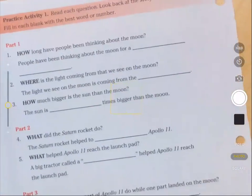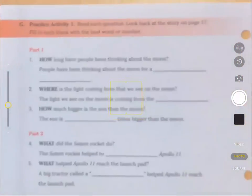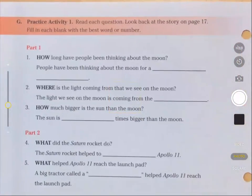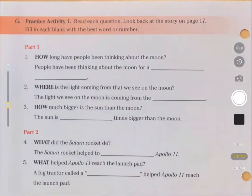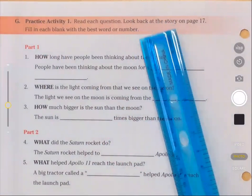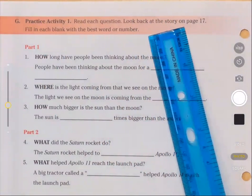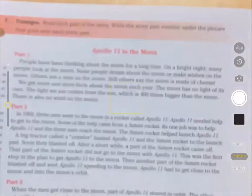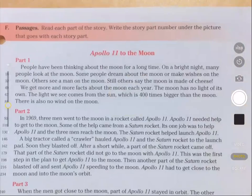Let us now take a look at page 18, practice activity letter G. We are going to be reading these questions and you may look back at the story on page 17. And again, the story we read was Apollo 11 to the Moon.